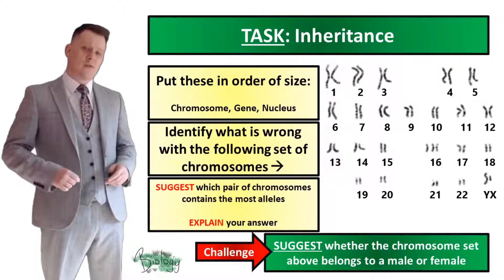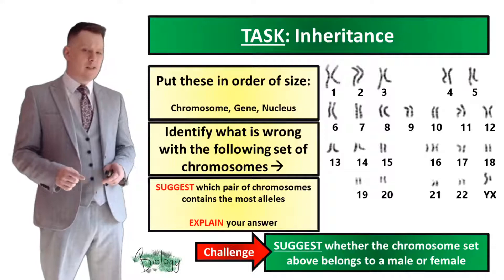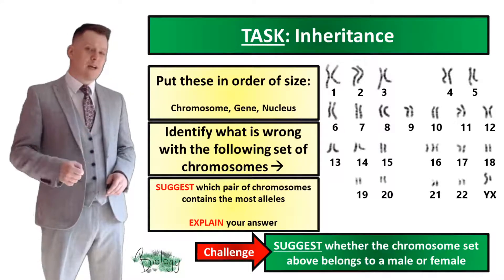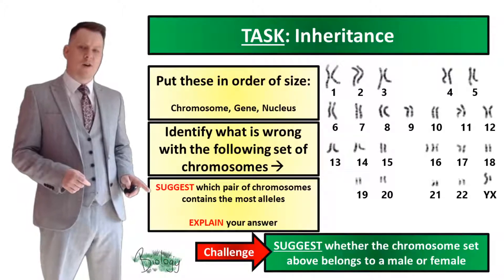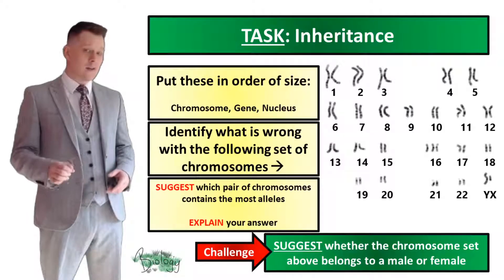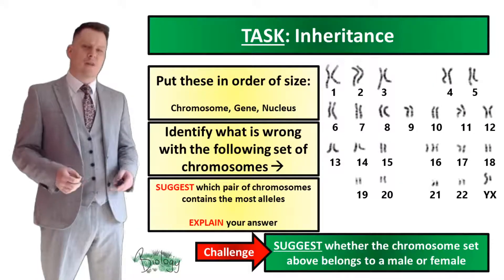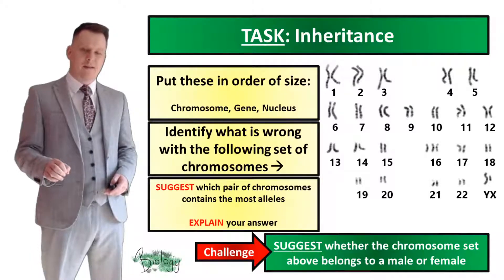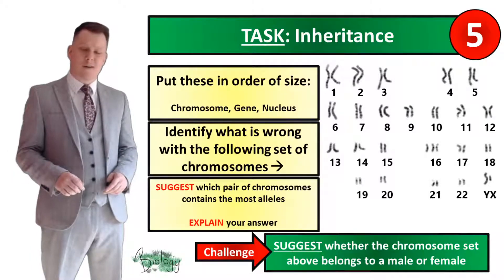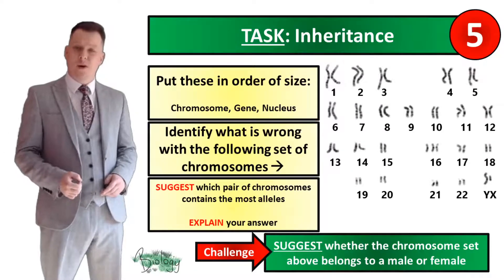We're going to break now for a task and answer three questions. Put these in order of size: chromosome, gene, and nucleus. Identify what is wrong with the following set of chromosomes. Suggest which pair of chromosomes contains the most alleles and explain your answer. As a challenge, suggest whether the chromosome set belongs to a male or a female. Pause the video if you need more time.